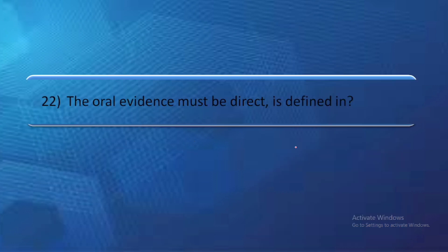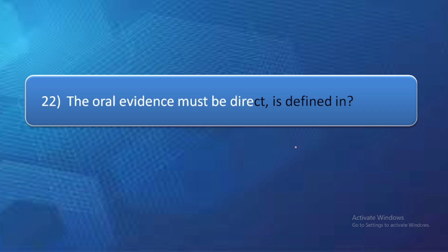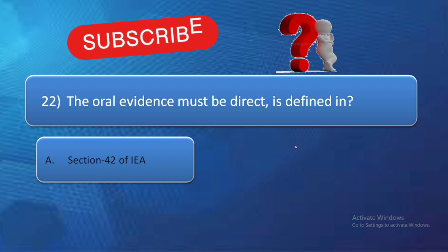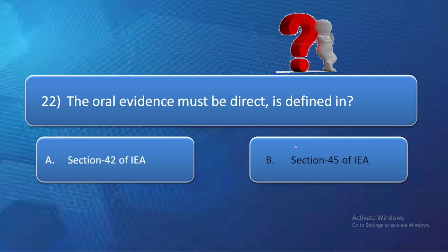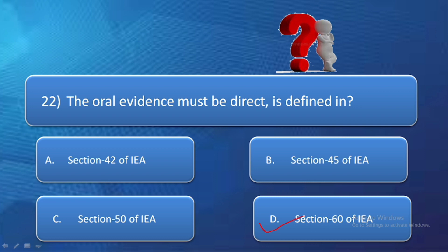Next question: The rule that oral evidence must be direct is defined in — option A: section 42, option B: section 45, option C: section 50, option D: section 60 of the Indian Evidence Act. Section 60 of the Indian Evidence Act states that oral evidence must be direct. So the right answer is option D — section 60 of the Indian Evidence Act.